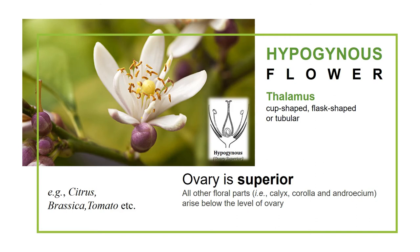Let's start with the hypogynous flower. In this flower, the thalamus may be cup-shaped, flask-shaped (like a bottle shape), or tubular in shape. The key point to remember in the hypogynous flower is that the ovary is superior in nature — it is present above the thalamus.